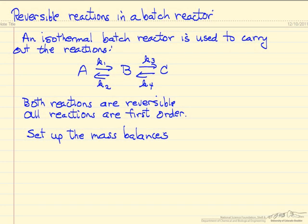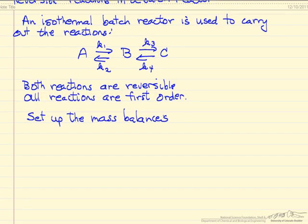Here we want to look at how we handle writing the mass balances for a batch reactor where we have reversible reactions. So an isothermal reactor with the reaction A goes to B and then B goes to C, and both reactions are reversible, so I've indicated the four rate constants. They're all first order just to make it easy, and the question is what do the mass balances look like for each of the components?